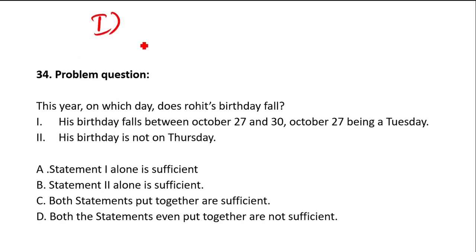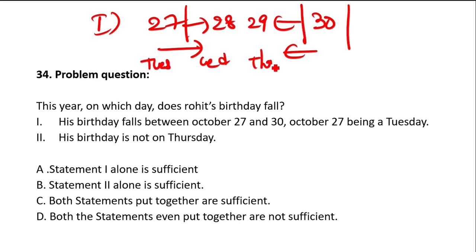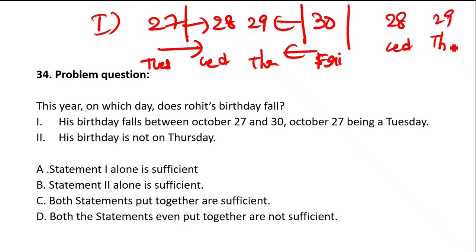Rohit's birthday falls between October 27 and 30, October 27 being Tuesday. After 27 and before 30 means it can be on 28th or 29th. If 27 is Tuesday, then 28 is Wednesday, 29 is Thursday, and 30 is Friday. But can you say when is Rohit's birthday? No — it can be 28th Wednesday or 29th Thursday. You have two possible dates, so you can't answer the question with only the first statement.